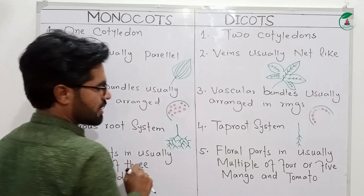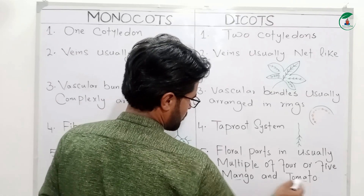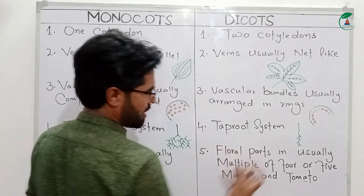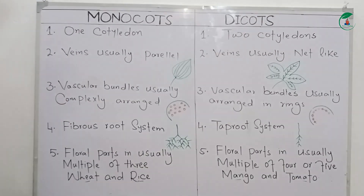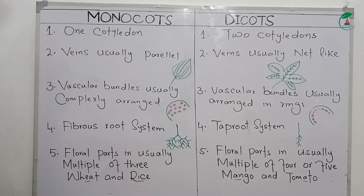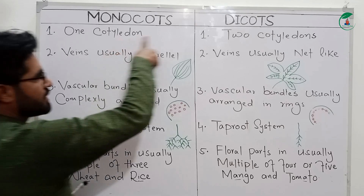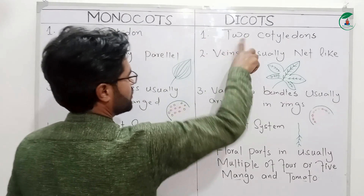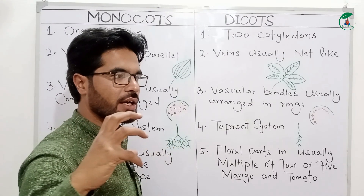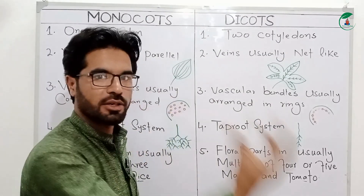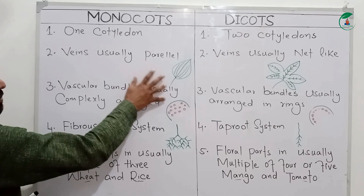For dicots, we have mango and rosemary as examples. We have dicot and dicot plants in this category.